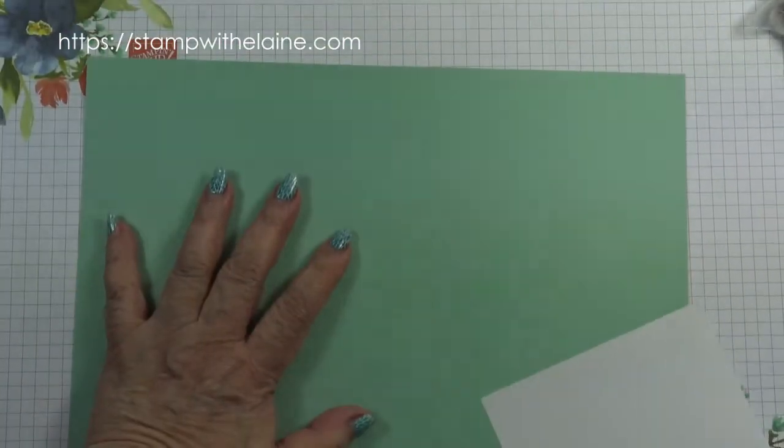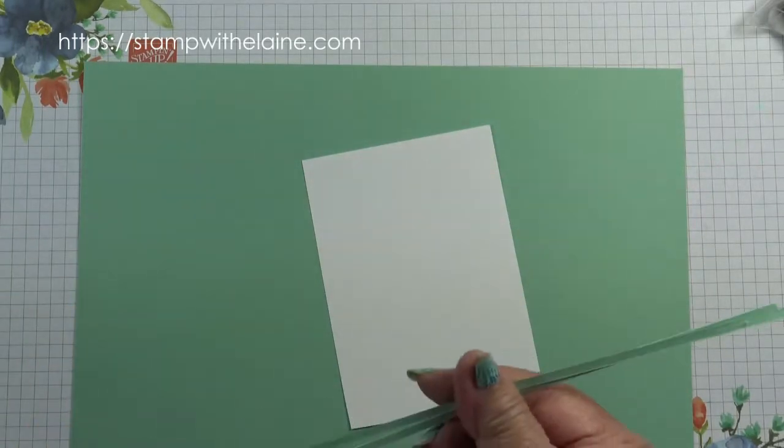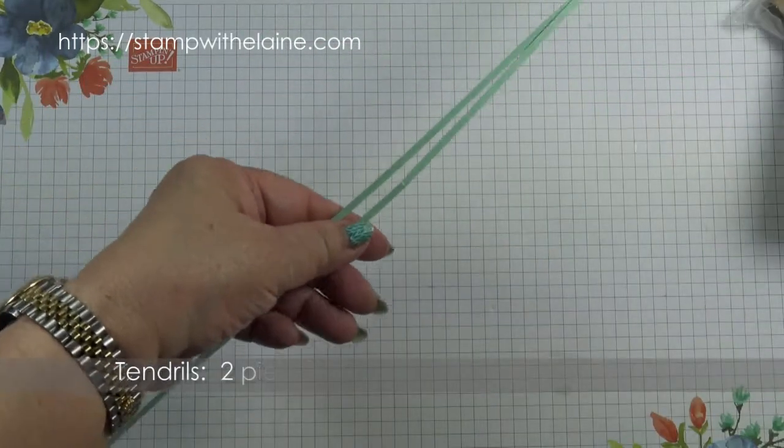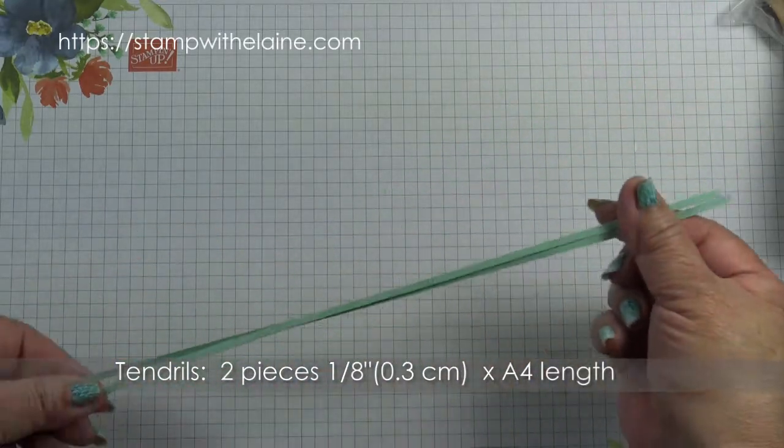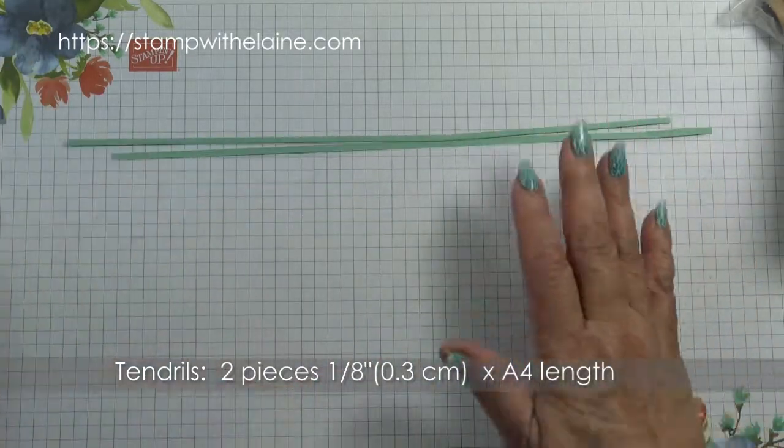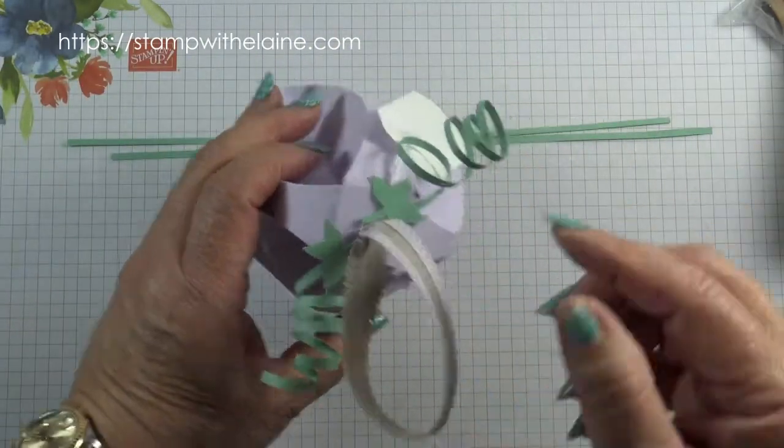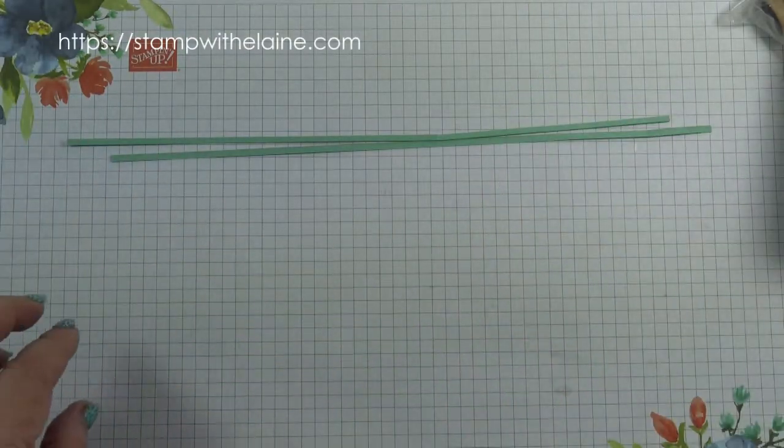We need scraps of mint macaron and basic white. From the mint macaron, you need to cut two pieces of 1 1/8 inch by A4 length to make the tendrils here and also the scrap to punch the leaves.